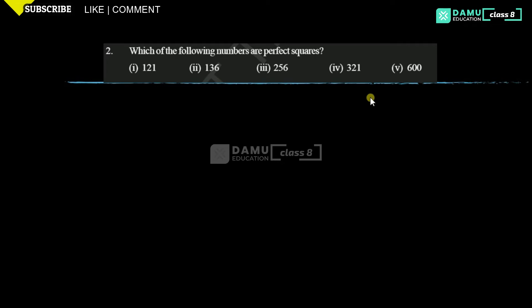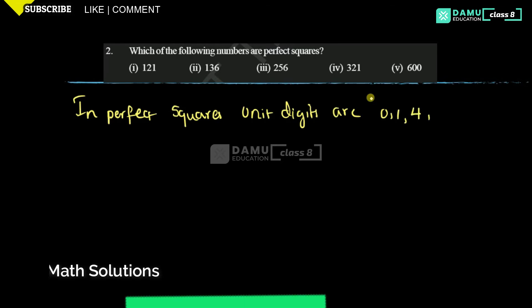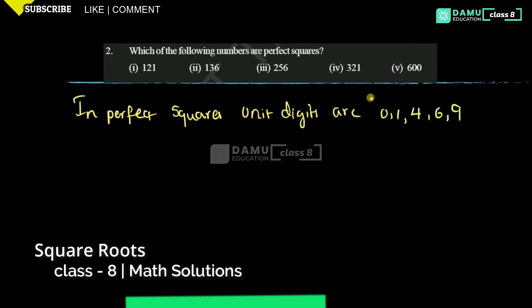So in this module, we are going to discuss which of the following numbers are perfect squares. We have to check: in perfect square numbers, unit digits are 0, 1, 4, 6, 9. These numbers only repeat as unit digits in perfect square numbers.